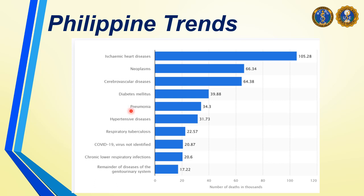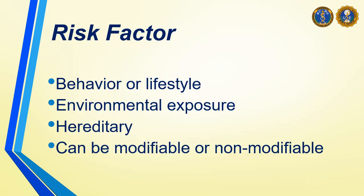Among the top five causes of death, pneumonia is the only communicable type of disease. The other four — ischemic heart disease, cancer, cerebrovascular disease, and diabetes — are non-communicable. Continuing from top six: hypertensive diseases are non-communicable, while tuberculosis, COVID-19, and chronic lower respiratory infections are all communicable disorders. Diseases of the genitourinary system, such as UTIs, are also communicable.